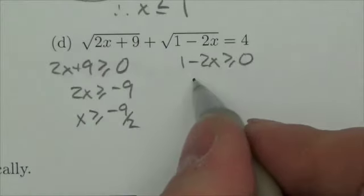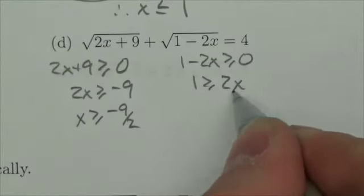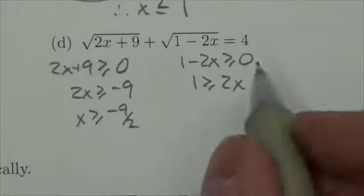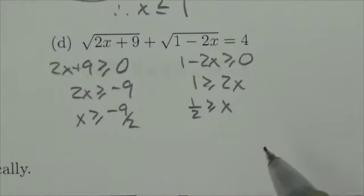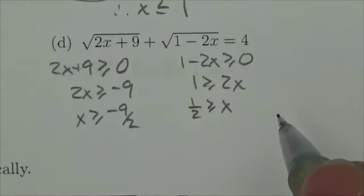Maybe this time I'll bring the 2x term over, so 1 has to be greater than or equal to 2x, then divide, and I'm going to get that x has to be less than or equal to a half.